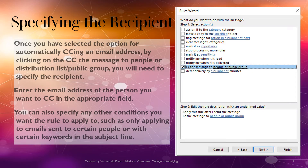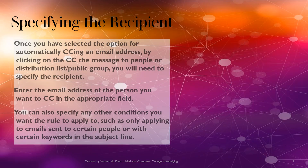Now we need to click on CC the message to people or public group. Here we will specify the email address of the person we want to CC the email to. You can also specify any other condition you want the rule to apply. My favorite is to notify me when the email has been delivered. Click on the link in step two, people or public group, and select the email address you would like to CC to. Then click Next.